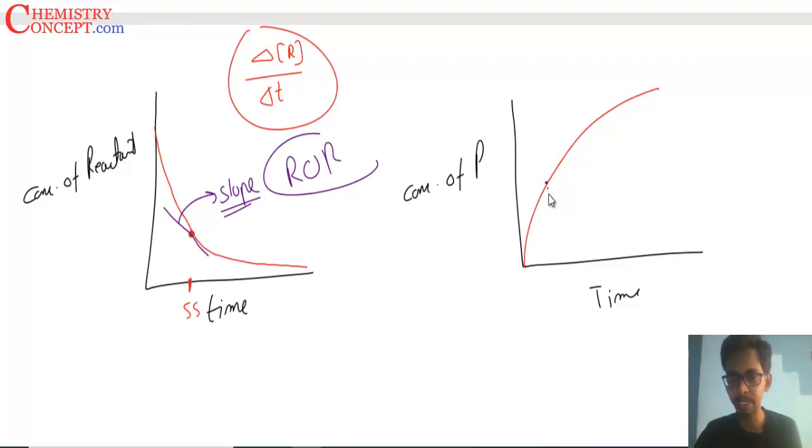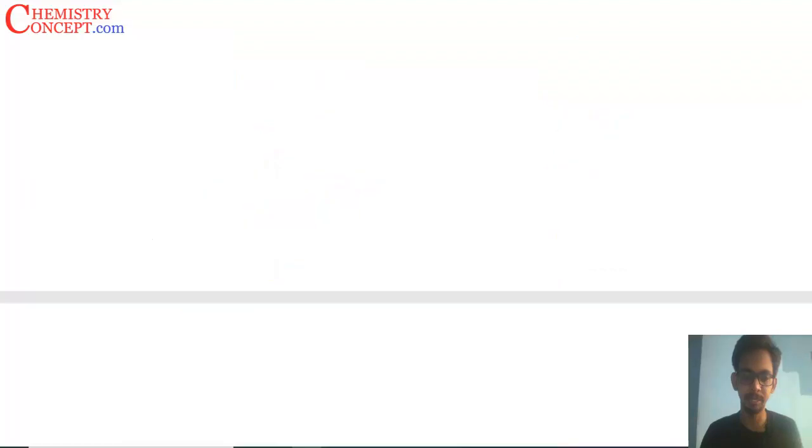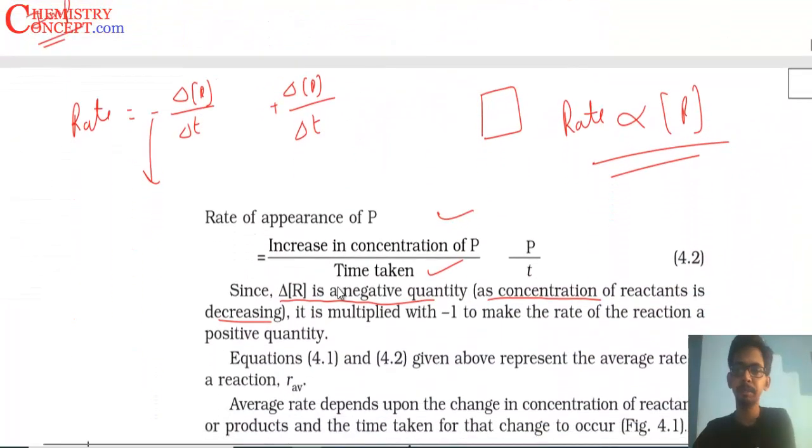The same way, if I want to find the rate in the product case at some time, the instantaneous rate, then at that point I will draw a tangent, and calculate the slope of that tangent. And that slope will give the rate of reaction at that particular time. This is called instantaneous rate.